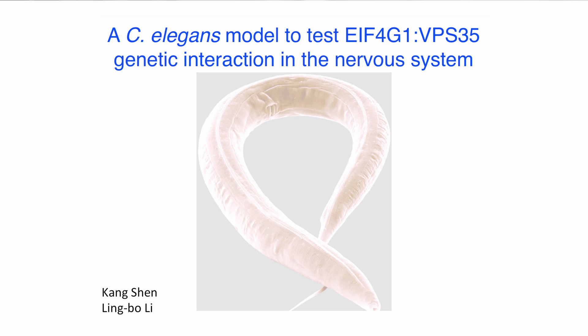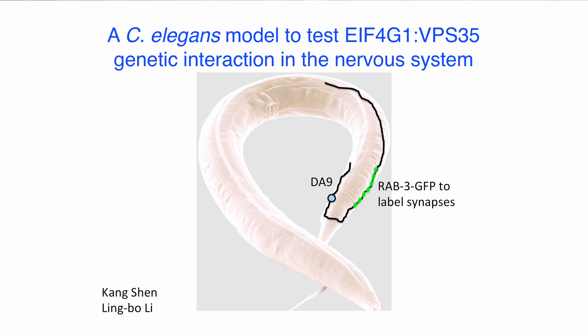The Shen laboratory uses the nematode C. elegans to study molecular mechanisms of synapse formation and maintenance. On the long axonal projections, synapses often form on a small, stereotyped region of the axon. For example, on the DA9 axon, synapses only form in the posterior segment of the dorsal axon. Synapse formation in this system is sensitive to VPS35 function. Therefore, VPS35 mutant worms provide a sensitized genetic background to test for potential interactions with EIF4G1.